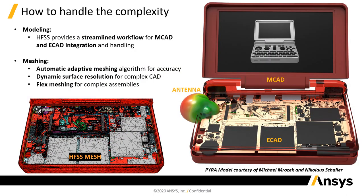Here we have an example of a laptop computer, and as you can see, we have mechanical CAD, electrical CAD, and antennas. The first challenge is how we can integrate all this information, since it usually comes from different sources. We have a very powerful platform in HFSS called HFSS 3D Layout, where we can import both mechanical CADs and electrical CADs and handle all this information efficiently, including complex print circuit board geometries.